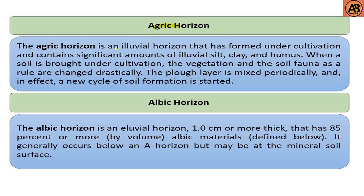The first one is the agric horizon. The agric horizon is an illuvial horizon that has formed under cultivation and contains significant amounts of illuvial silt, clay, and humus. When a soil is brought under cultivation, the vegetation and soil fauna are changed drastically. The plow layer is mixed periodically, and in effect a new cycle of soil formation is started.